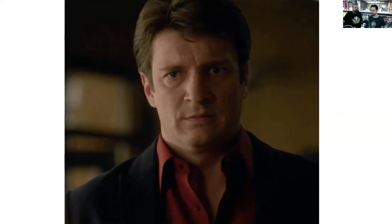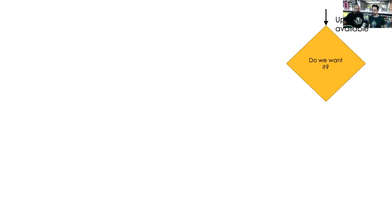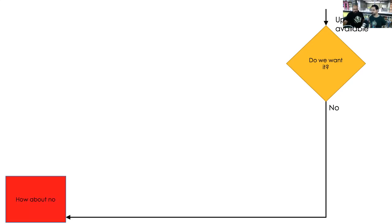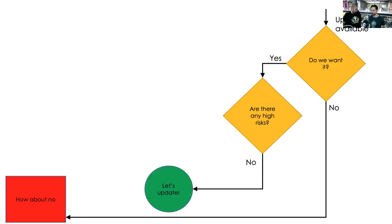To answer this, we need to ask: how do we decide whether to update software or not? We have an update available. The first question is: do we even want it? Are there interesting features? If you don't want it, you won't take it — that's what happened with Java 9, there were no interesting features people needed. But sometimes there are interesting features. Then the next question is: are there any high risks? If there's no high risk, let's update.